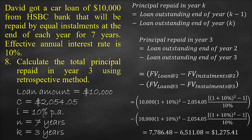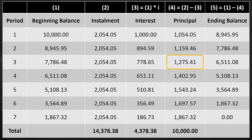This gives us $7,786.48 minus $6,511.08, which is equal to $1,275.41. Another way to check our answer is to look at the loan amortisation schedule. We will find that the principal paid in Year 3 is equal to $1,275.41, which is exactly the same as our calculation from the formula.